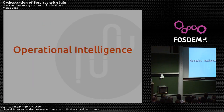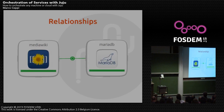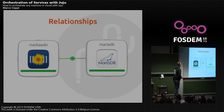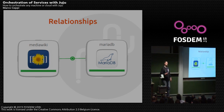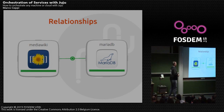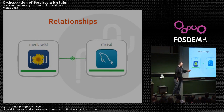On top of that, there's also operational intelligence. The relationships — which is the line between MediaWiki and MariaDB — is how we're doing the orchestration. This is how we're dictating things and how the events system works in the environment. So we can change out MariaDB with MySQL if we want to.